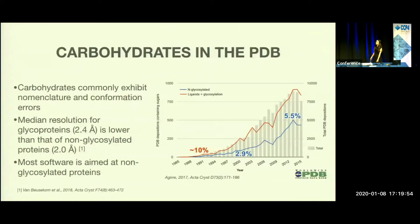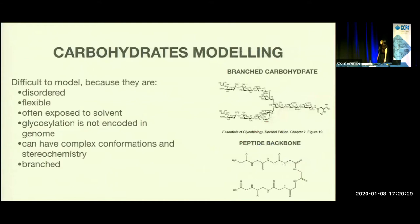About 10% of all structures in the PDB contain ligands or glycosylation, and about 5.5% of all structures can contain N-glycosylation in particular. However, carbohydrates in the PDB commonly exhibit nomenclature and conformation errors, and the median resolution for glycoproteins is lower than that of non-glycosylated proteins. Also, most software is aimed at non-glycosylated proteins. Carbohydrates are difficult to model because they're disordered, they're flexible. Glycosylation is often exposed to solvent, and it's not encoded in the genome. Carbohydrates can also have complex conformations and stereochemistry, and they can be branched.